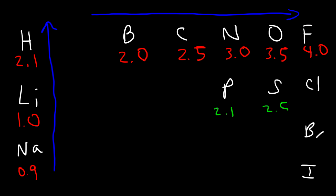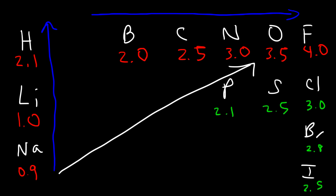Generally speaking, as you go towards the right, electronegativity increases. Phosphorus is 2.1, sulfur is 2.5, chlorine is 3.0, bromine is about 2.8, and iodine is 2.5. The general trend is that electronegativity increases towards fluorine — fluorine is the most electronegative element on the periodic table. The noble gases don't have electronegativity values because they're stable and don't want electrons.